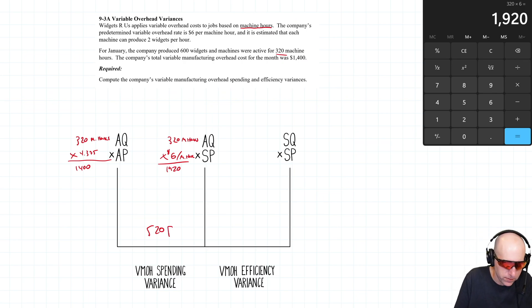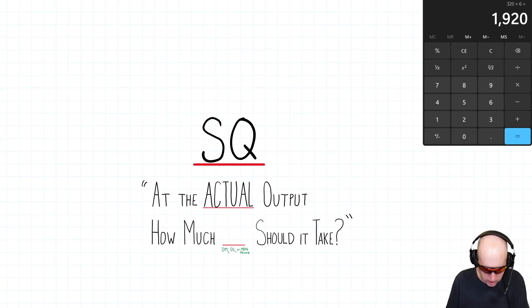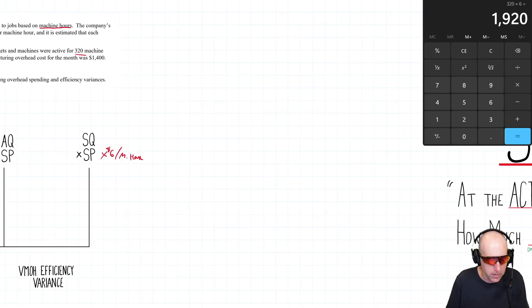SQ×SP – so SP remains six dollars per machine hour. SQ, I've been showing this a lot: at the actual output level, the actual number of units produced, how much in this case of the overhead driver machine hours should it take?